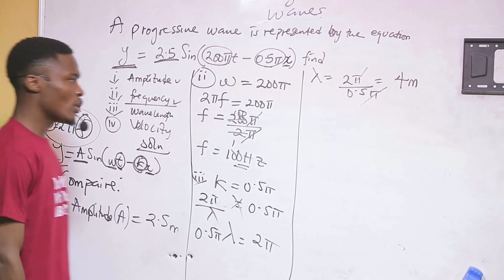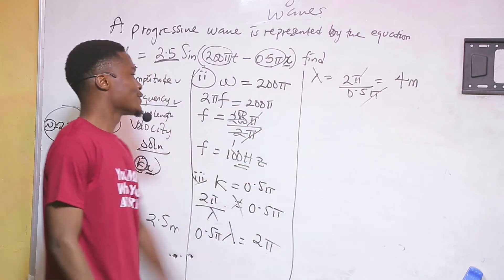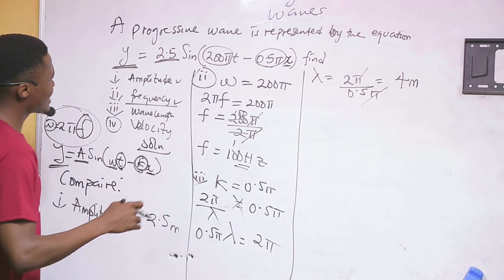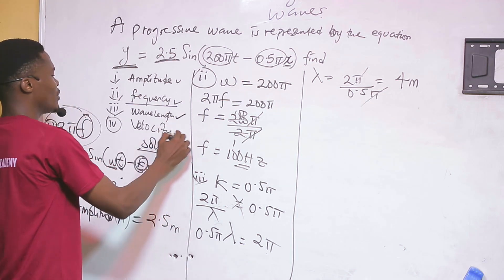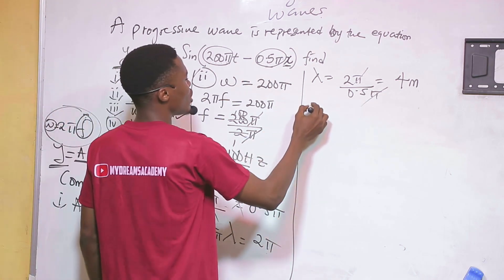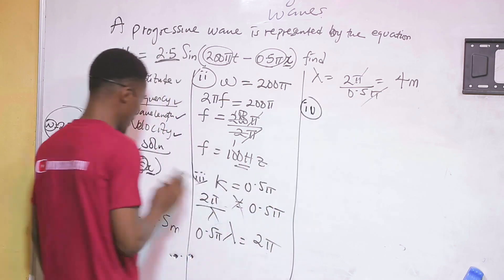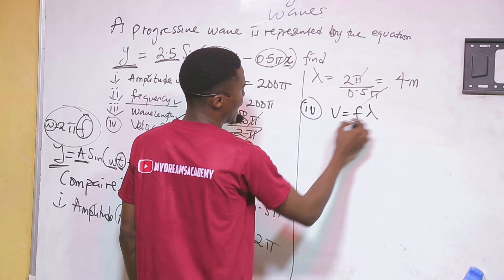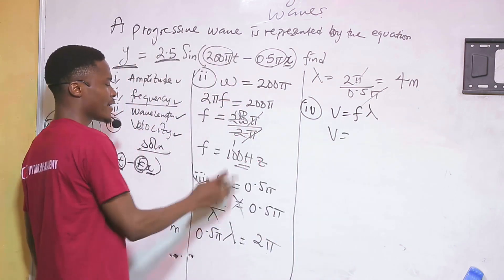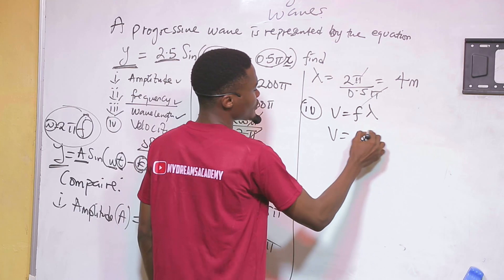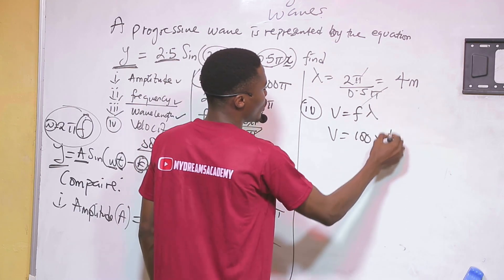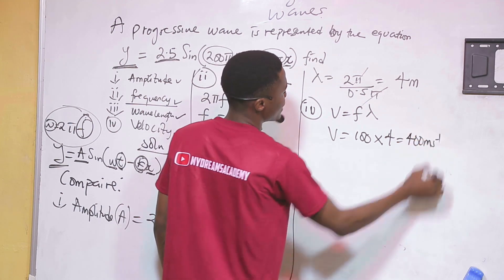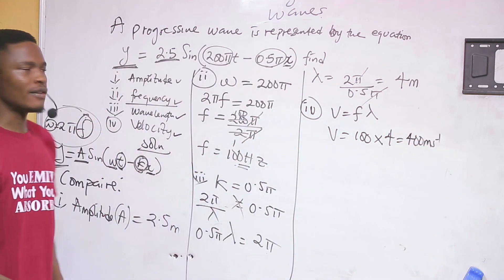Now we find the velocity. Since we already know the frequency and wavelength, we use v equals fλ. Frequency was 100 Hz and wavelength was 4 meters, so v equals 100 times 4, which gives 400 meters per second. That is the velocity of the wave.